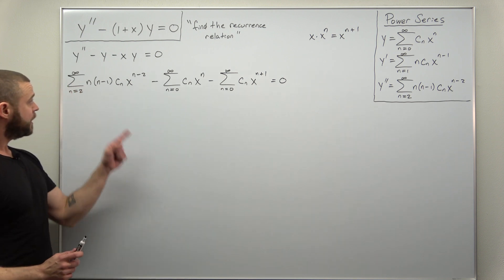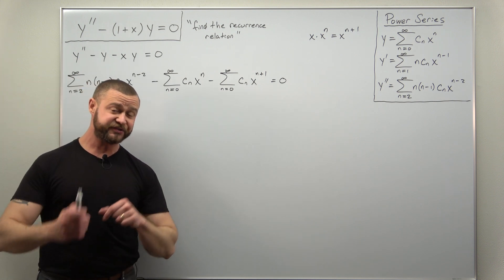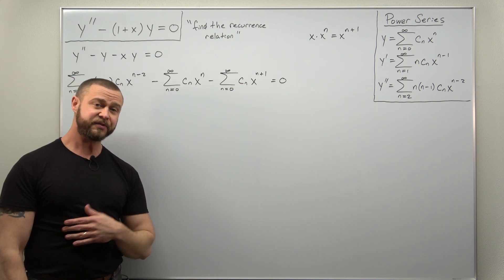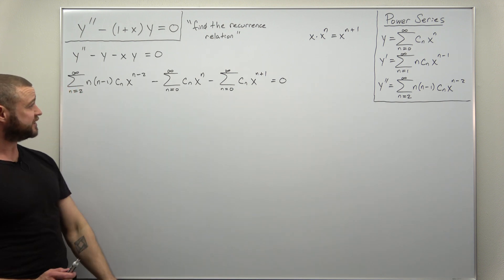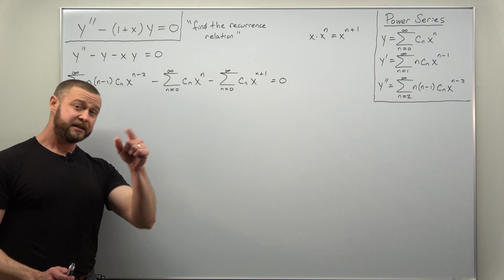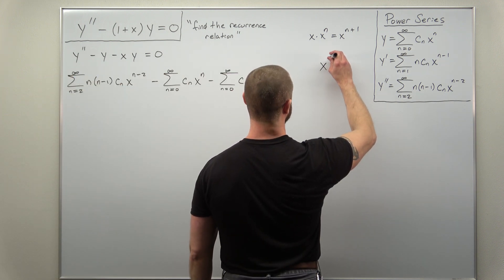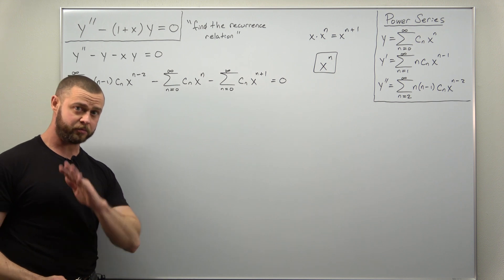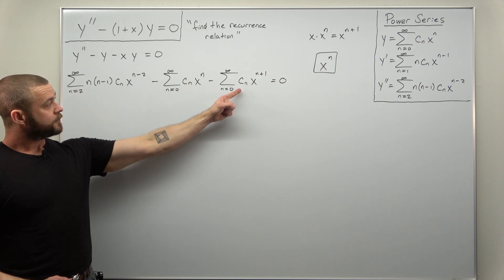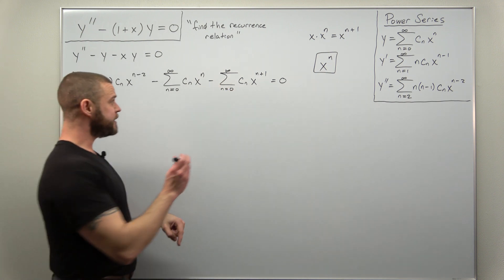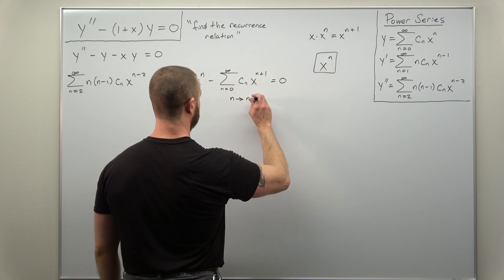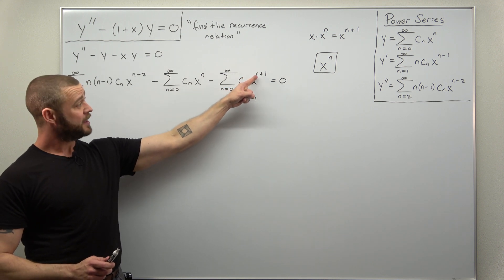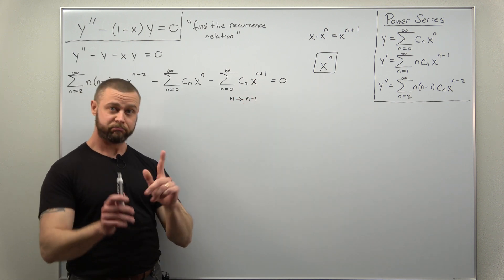We want to collapse all three power series into a single one, and also have the same power of x. The nicest option is to shift everything to x to the n as our power of x. For the middle power series, we can leave that alone. For the last one, to get x to the n, replace n with n minus 1 — check: n minus 1 plus 1 gives x to the n, so that works.